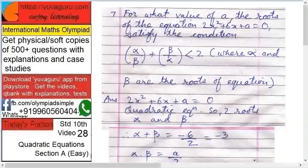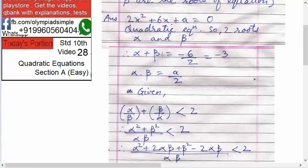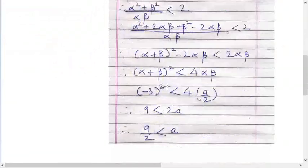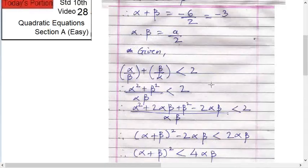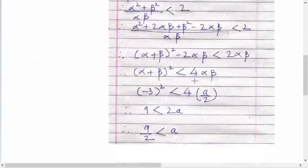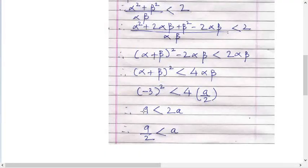What is alpha plus beta? It's given that alpha plus beta is minus three. So minus three the whole square is less than four into alpha beta. Alpha beta is a by two, so four into a by two. Minus three square is nine, nine less than two a.